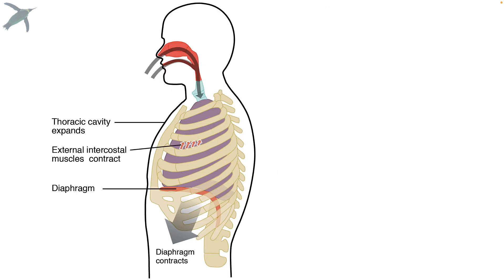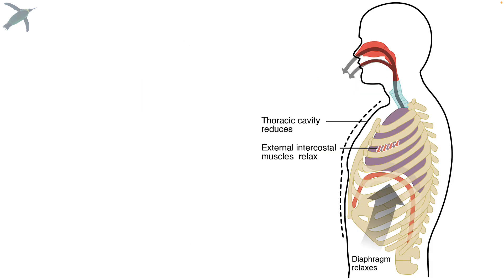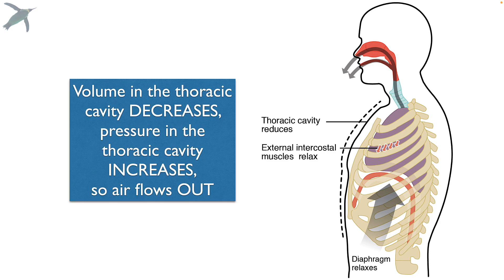Here's a lateral view showing the diaphragm contracting and moving inferiorly, increasing the volume, causing the pressure to decrease, drawing air in. When the diaphragm relaxes and moves superiorly, you can see the volume in the thoracic cavity decreases, so pressure goes up and the air flows out.